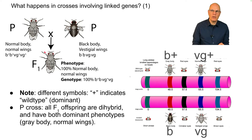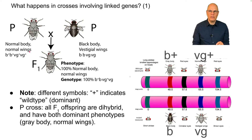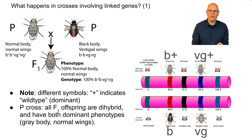In this P cross, we're crossing a normal body, normal winged fly (B+, B+, VG+, VG+) with a black-bodied vestigial-winged fly. Those are both recessive traits.